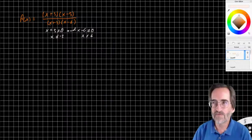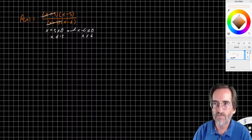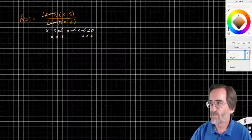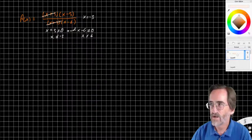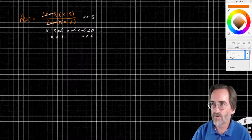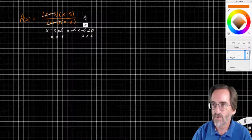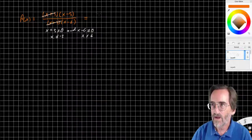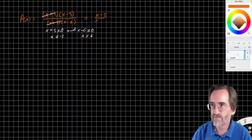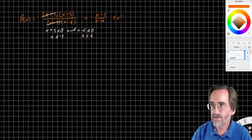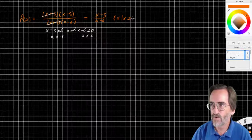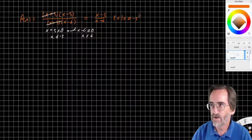However, the x+3s cancel out. And so we would say as long as x does not equal negative 3, this function is equivalent to (x-5)/(x-6), such that x does not equal negative 3.